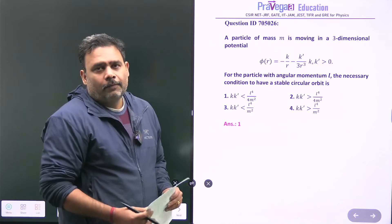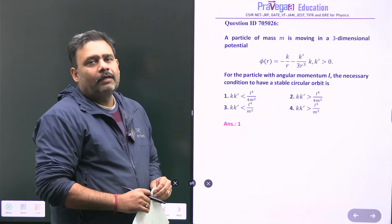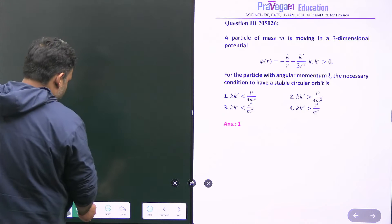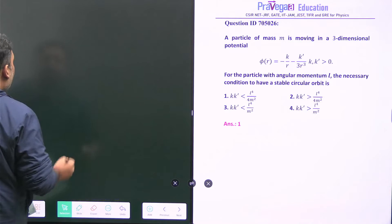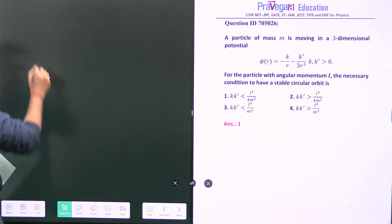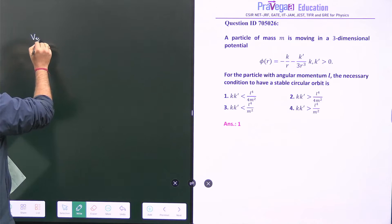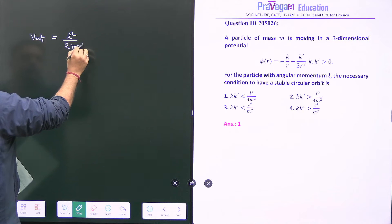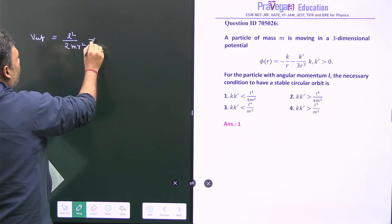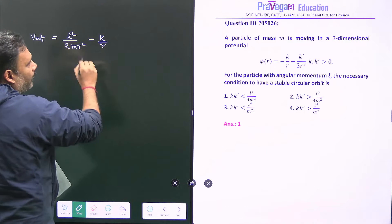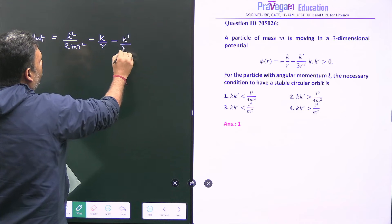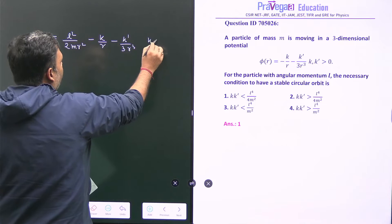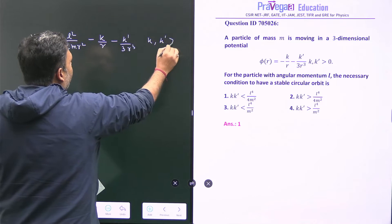This type of problem we can easily solve with the use of V_effective. So what will be V_effective? V_effective = L²/(2mr²) + potential energy = L²/(2mr²) - k/r - k'/(3r³). This is our V_effective, and it is given that k as well as k' is greater than 0.